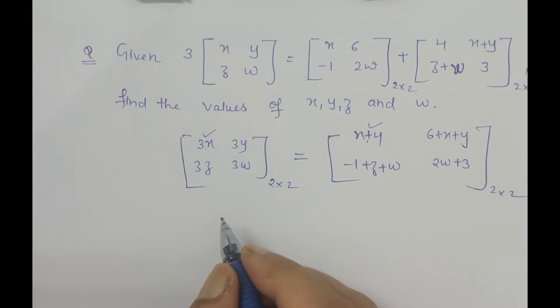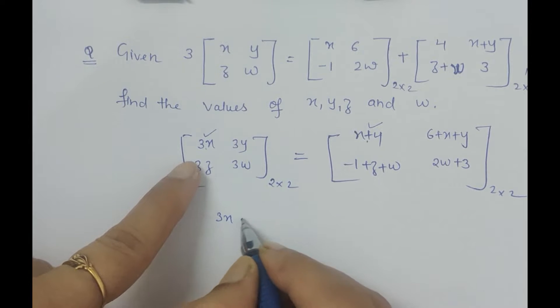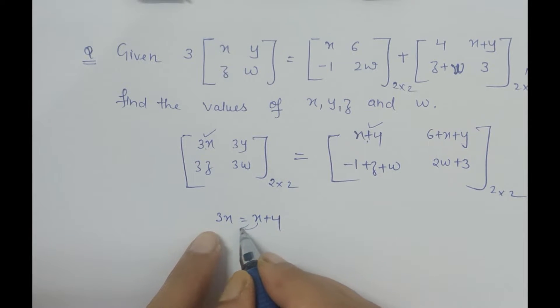Here I write 3x equals x+4. When I shift this x to this side, I get 2x equals 4, and x is 2. So this is the value of x.